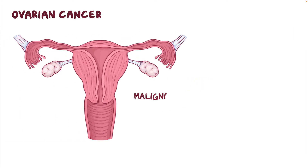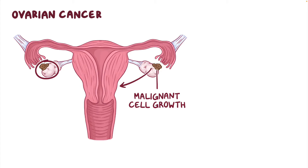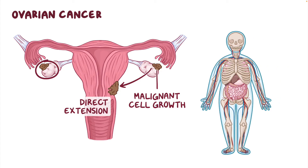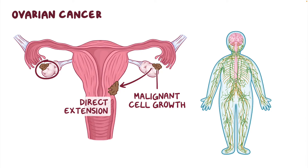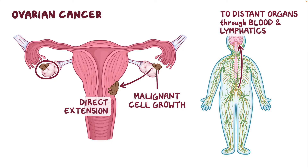Ovarian cancer is a malignant cell growth that begins in the ovaries. It often occurs bilaterally, or on both sides, and spreads quickly to nearby organs through direct extension, to abdominal organs through a process known as abdominal seeding, and to distant organs through the blood and lymphatic systems.